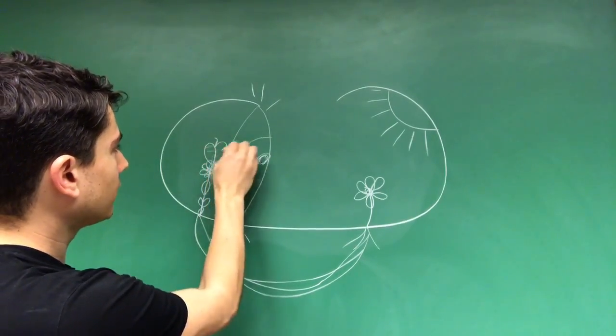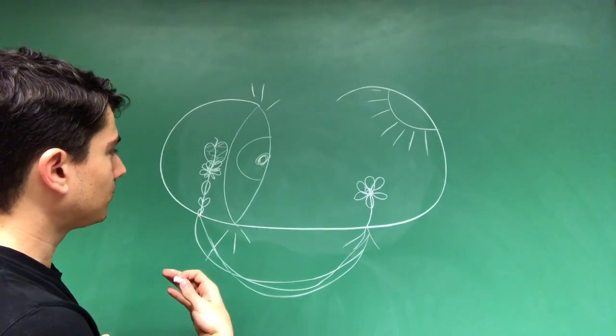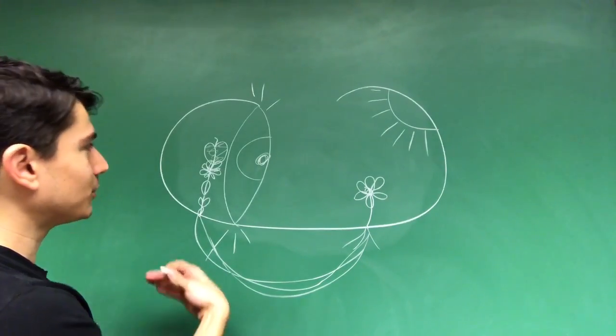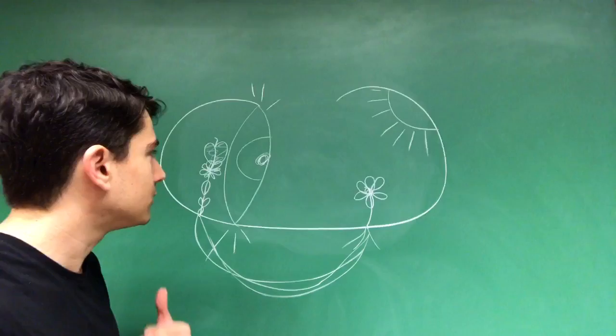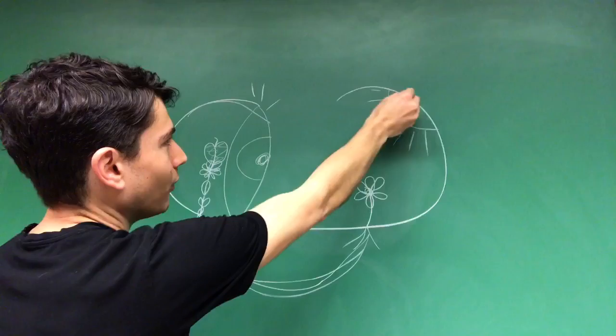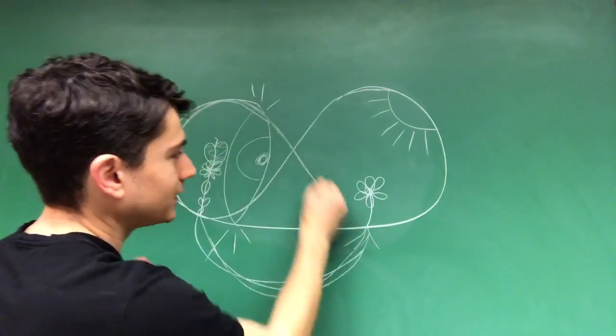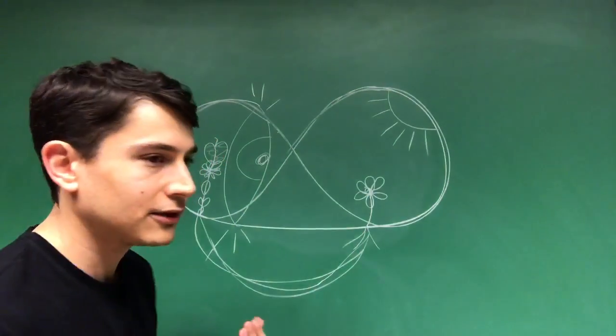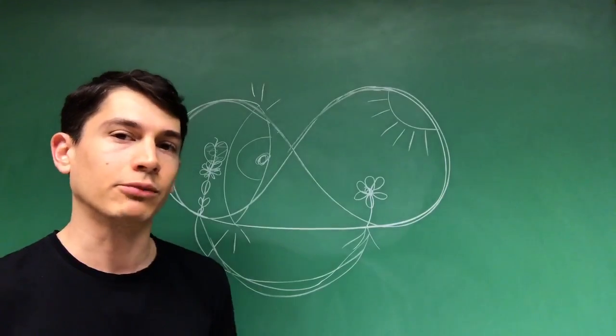And for Goethe, this archetypal process that we can subjectively recreate connects us, connects the mind and the world, linking this circuit that reflective dualistic consciousness had broken.